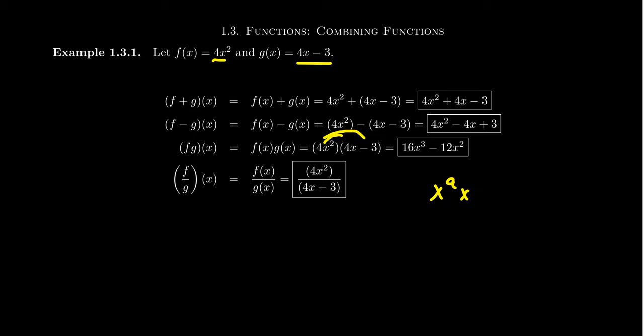Finally, with division: to divide f by g, we take the formula for f(x) and divide it by the formula for g(x), then simplify if appropriate. At this stage, no simplification is necessary — you have 4x² on top and 4x - 3 on the bottom, with no common divisors between the two. So that's its simplified form. This gives us the formula for the four combinations of f and g.